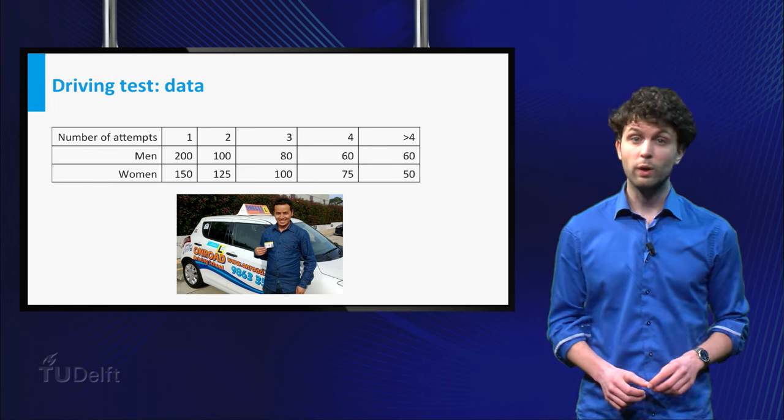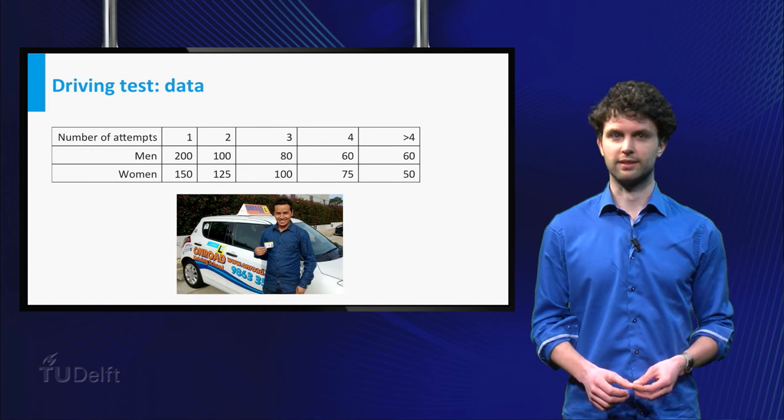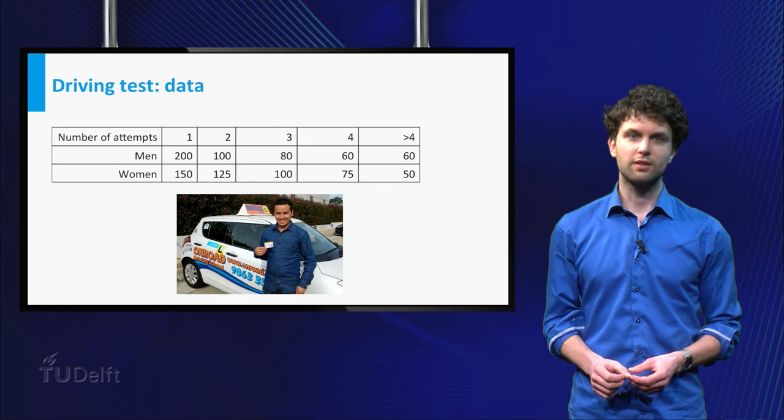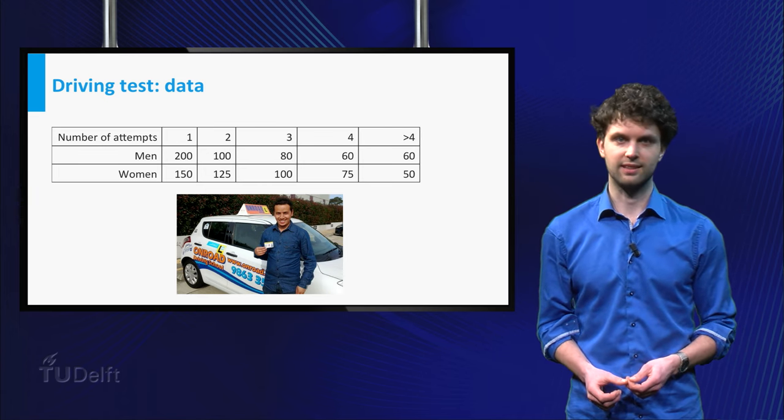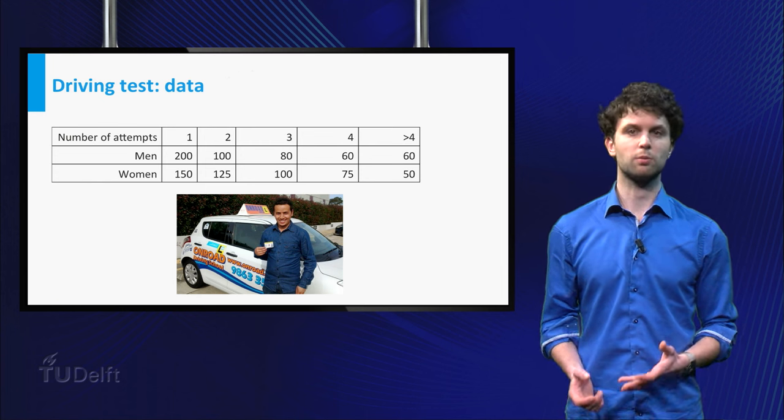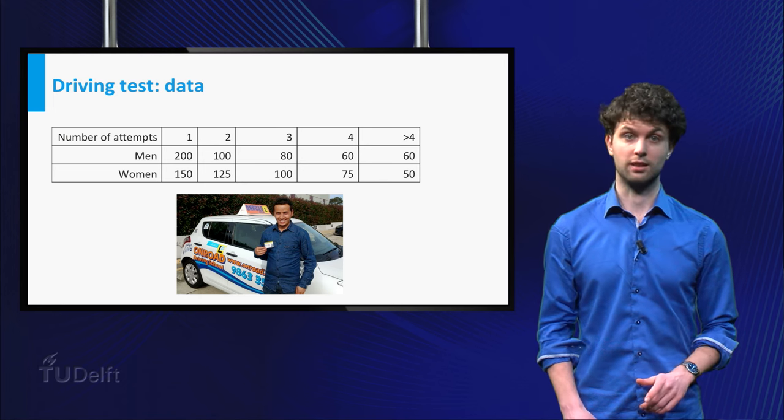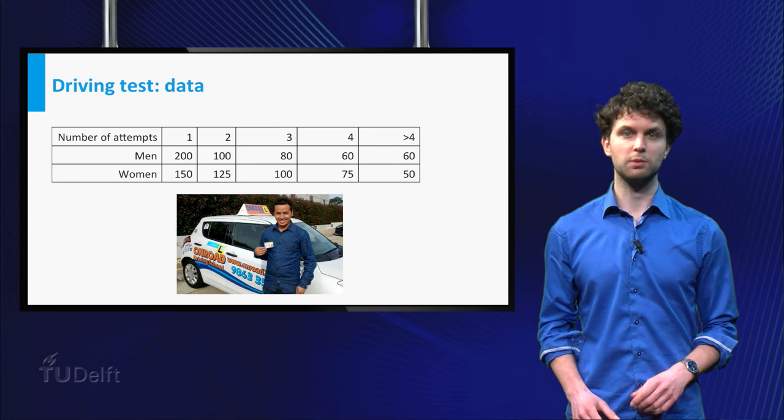Suppose in a year, one thousand people tried to pass their driving test. In the table over here, you see the results. Note that the number of tries that is needed to pass the test is displayed, and some people needed more than four tries. You can also see that the distribution among men and women seems different.